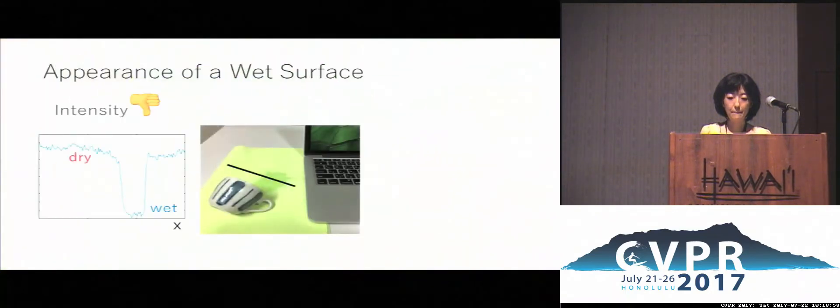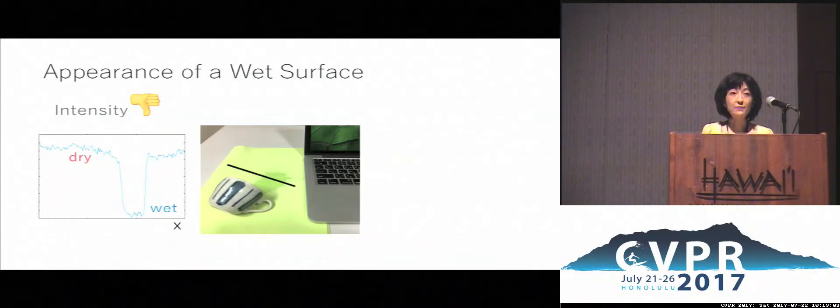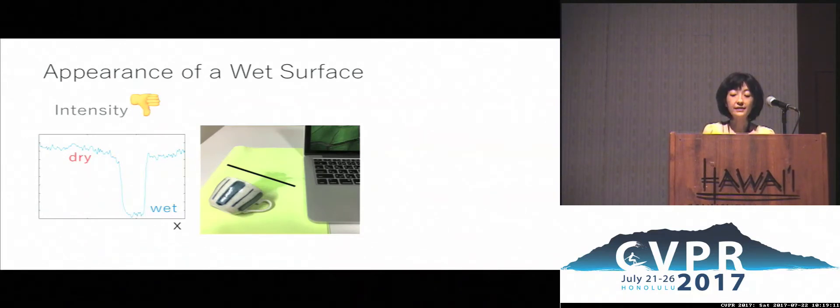Let's look at this familiar case, where you've spilled some water on a piece of cloth. If you look at the intensity values of pixels along this line on this cloth, you can see that it gets significantly darker where it got wet.